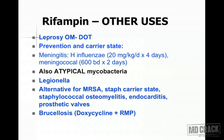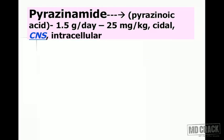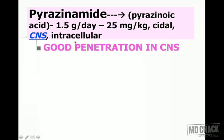Moving on to pyrazinamide: it is converted inside the body into pyrazinoic acid, which produces the therapeutic effect. The standard dose is 1.5 grams, or 25 mg/kg body weight. It is a first-line bactericidal agent with good CNS penetration and good intracellular penetration.